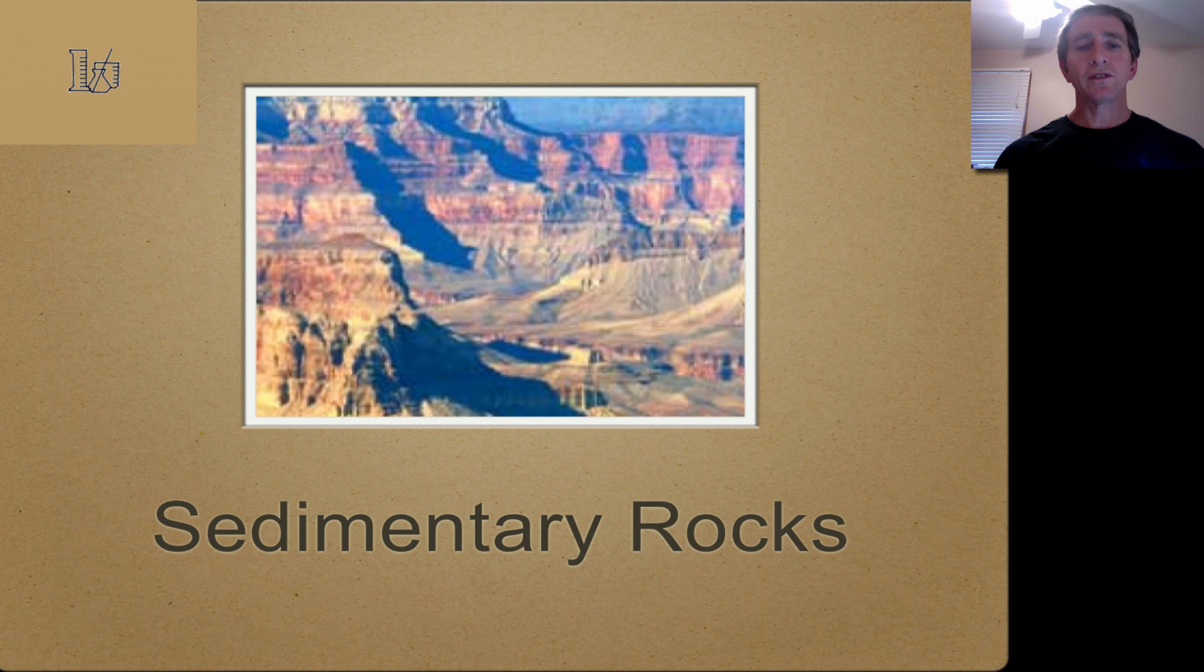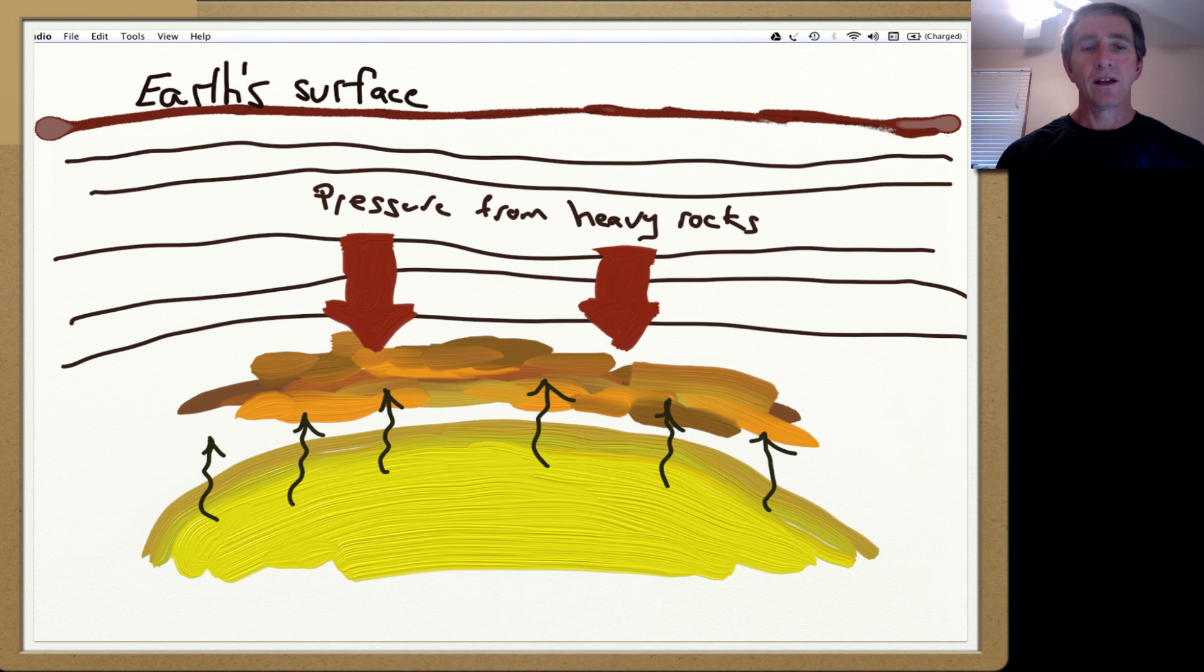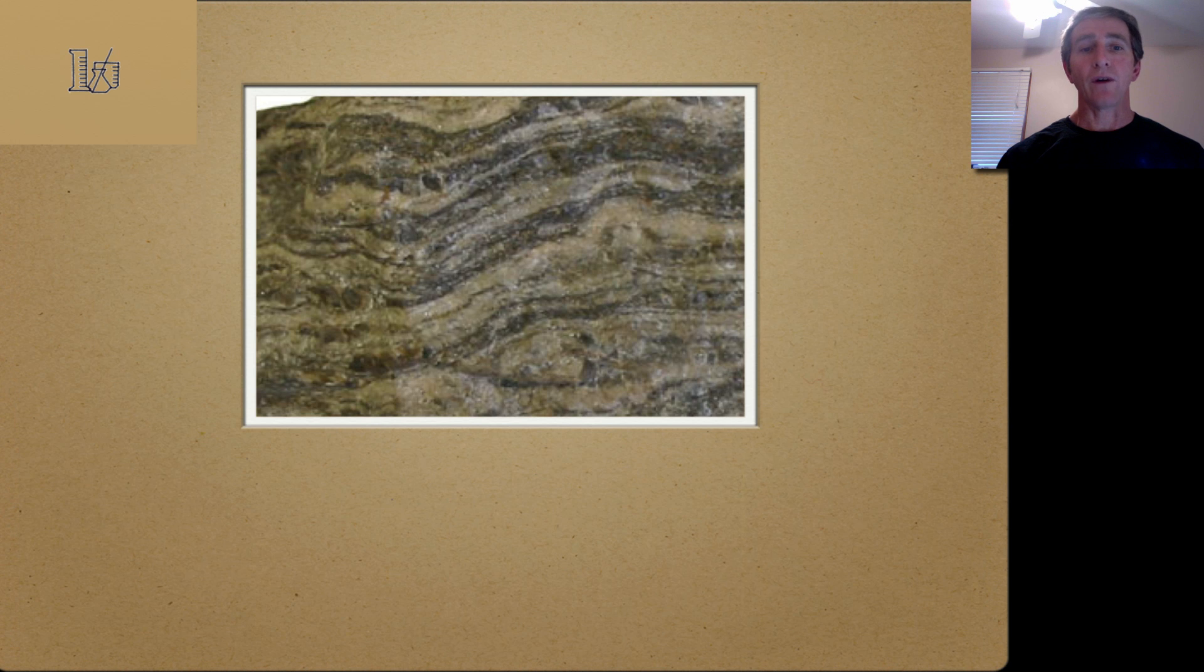As more and more sediments are laid down above the rock, tons and tons of rock will push down on it, pushing it down further and further until it gets close to the heat source that's at the center of the earth. We have pressure from above and heat from below that creates heat and pressure to make metamorphic rocks.